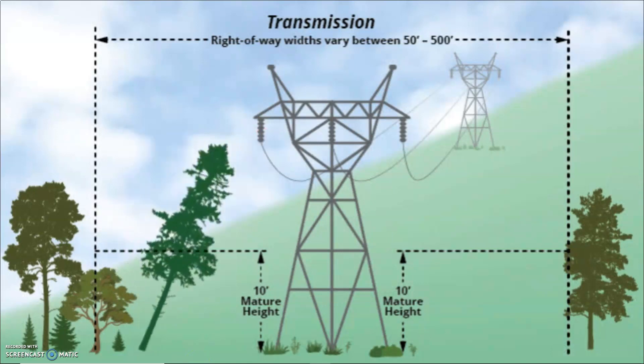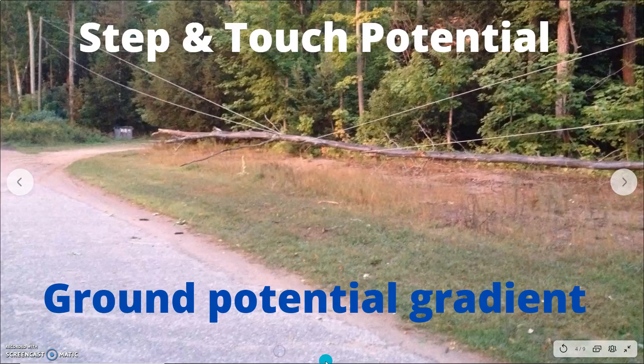One example is a tree falling onto a transmission line. To understand step and touch potential, we first need to understand how energy dissipates across conductive objects during broken pole or down wire conditions. Some really good conductors exist that provide a path to the ground, including metal fences, wet soil, and rails. Other conductors may not be as good, yet still allow current to travel to the ground, such as trees, wood fences, and utility poles. Wood is typically thought of as an insulator, but wet wood will conduct electric current.